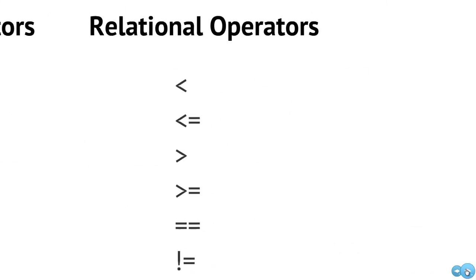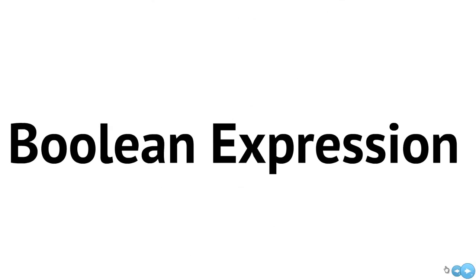Now let's look at the relational operators. We'll cover six of the eight relational operators supported by Python: less than, less than or equal to, greater than, greater than or equal to, the equivalence or equal-to operator (using double equals, since single equals means assignment), and not equal to. All of these relational operators are binary operators requiring two operands. We can combine Boolean operators and relational operators into much more complex expressions that still resolve to a true/false value.